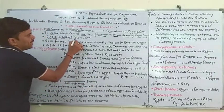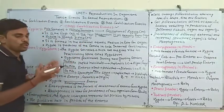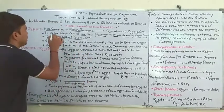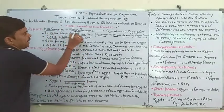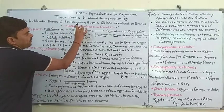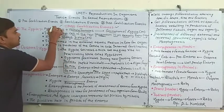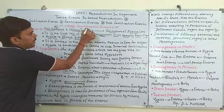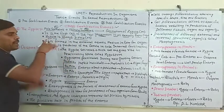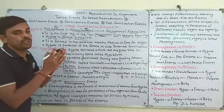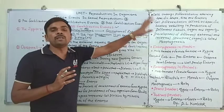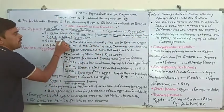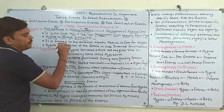Zygote is always diploid. Zygote जो है वो diploid है। क्यों? क्योंकि female gamete और male gamete दोनों haploid होते हैं, और haploid के fusion से diploid Zygote बनेगा। तो Zygote is always diploid.